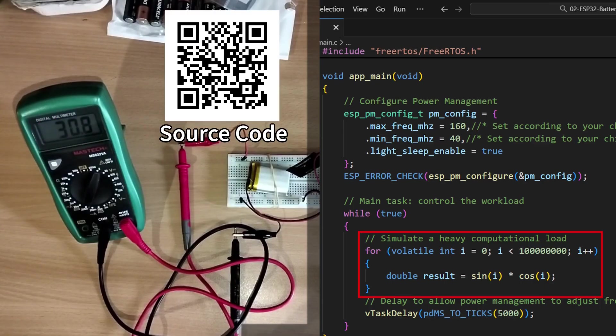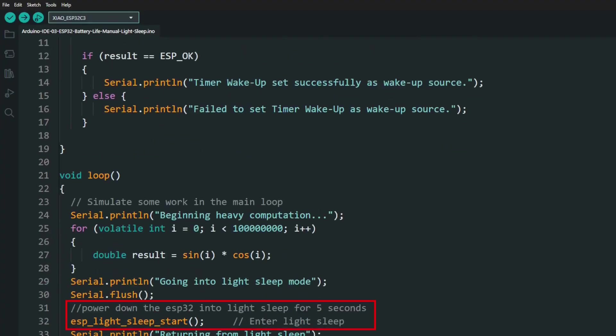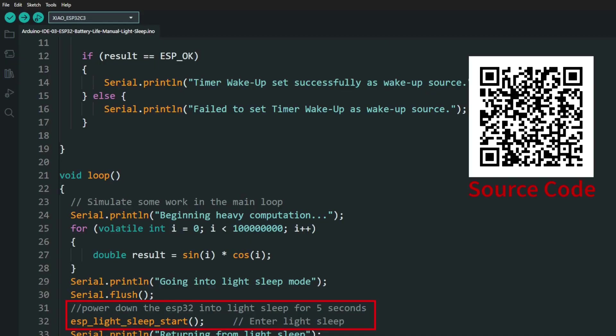But what if you love the simplicity of the Arduino IDE? Don't worry. We can trigger light sleep manually. The magic command here is ESP light sleep start. You can use this as a super low power replacement for the standard delay function. It's a fantastic way to save energy during idle moments inside your main loop.